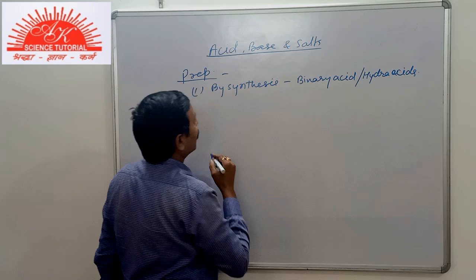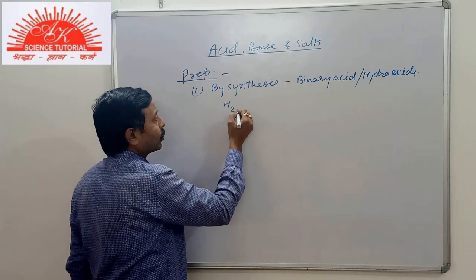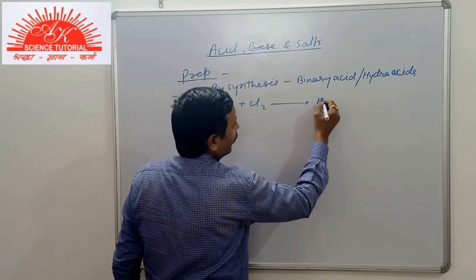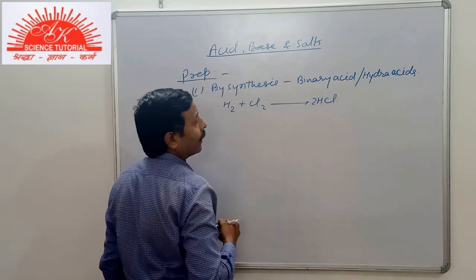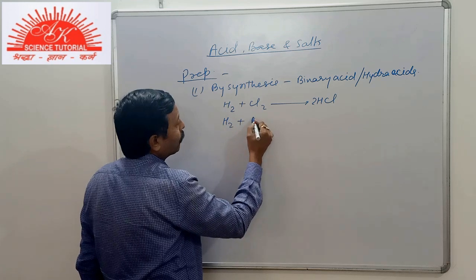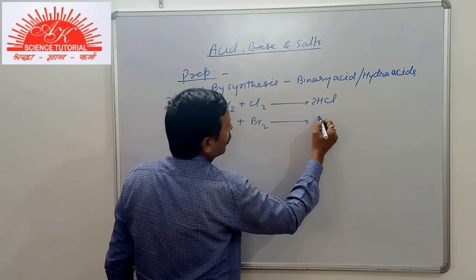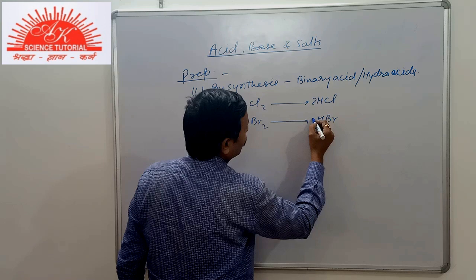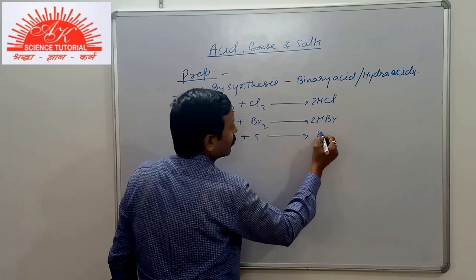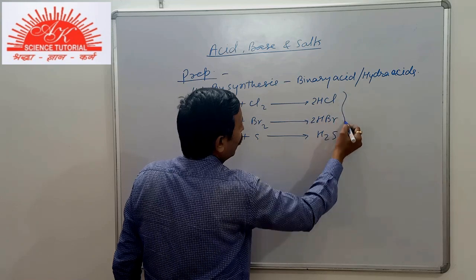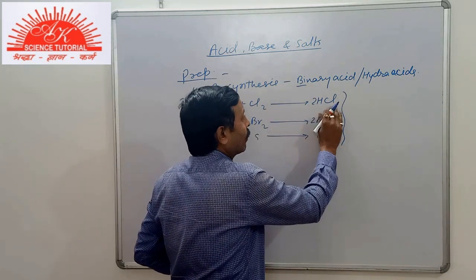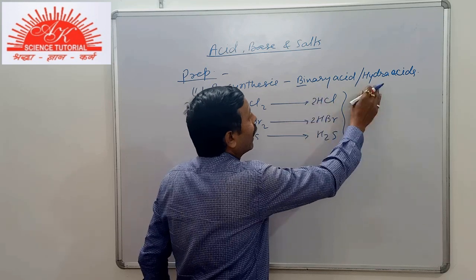Hydroacids. Now, like you see, H2 plus Cl2 gives HCl. H2 plus Br2 gives HBr. Similarly, H2 plus S gives H2S. So all of them are binary acids. Bi means two. So there are only two elements or hydroacid. It does not contain oxygen.